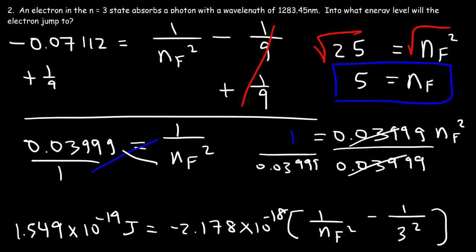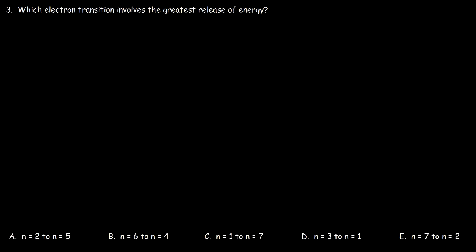This answer is reasonable because when the electron absorbs a photon, n_final should be greater than n_initial of 3, and 5 is indeed greater than 3. The electron jumps to the 5th energy level.